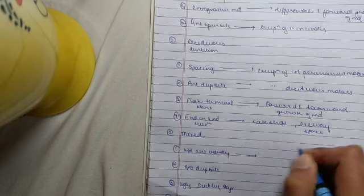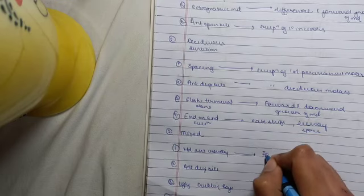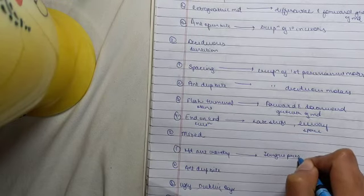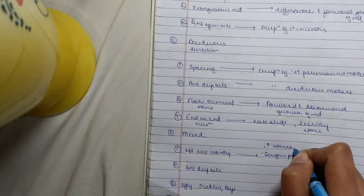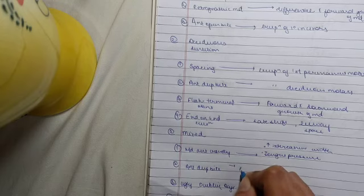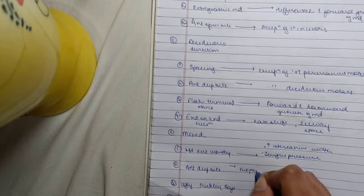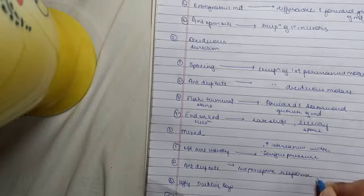Now, mandibular anterior crowding is corrected by the tongue pressure, also by increase in intercanine width. Anterior deep bite is corrected by the proprioceptive response condition of patient.